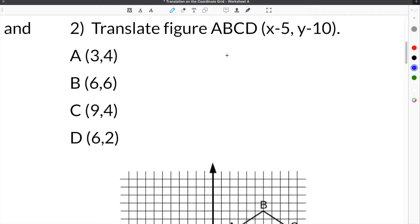Number two says translate figure ABCD, x minus 5, and y minus 10. We know that x controls if it's going to go left or right. And we know that y controls if it goes up or down.